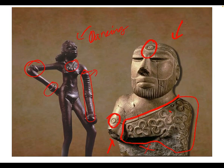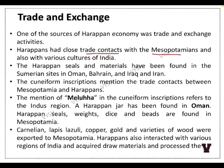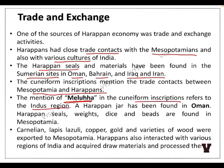Harappans had close trade contacts with Mesopotamia and various other cultures. Harappan seals and materials have been found in Sumerian sites in Oman, Bahrain, Iraq, and Iran. Cuneiform inscriptions mention trade contacts between Mesopotamia and the Harappans. The word 'Meluha' in cuneiform inscriptions refers to the Indus region. A Harappan jar has been found in Oman. Harappan seals, weights, dyes, and beads are found in Mesopotamia. Carnelian, lapis lazuli, copper, gold, and varieties of wood were exported to Mesopotamia from Harappa. Harappans also interacted with various regions within India.